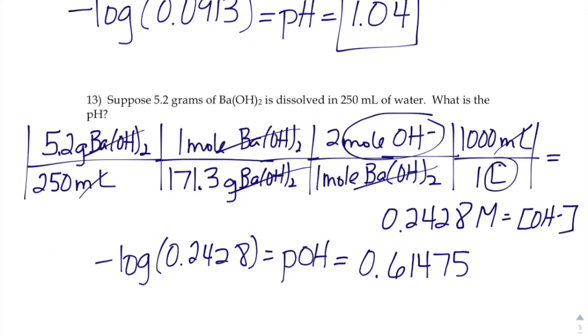Well, that's the pOH and the question was asking about the pH. pH and pOH always add up to 14, so if we just subtract that number from 14, that'll get us our pH.